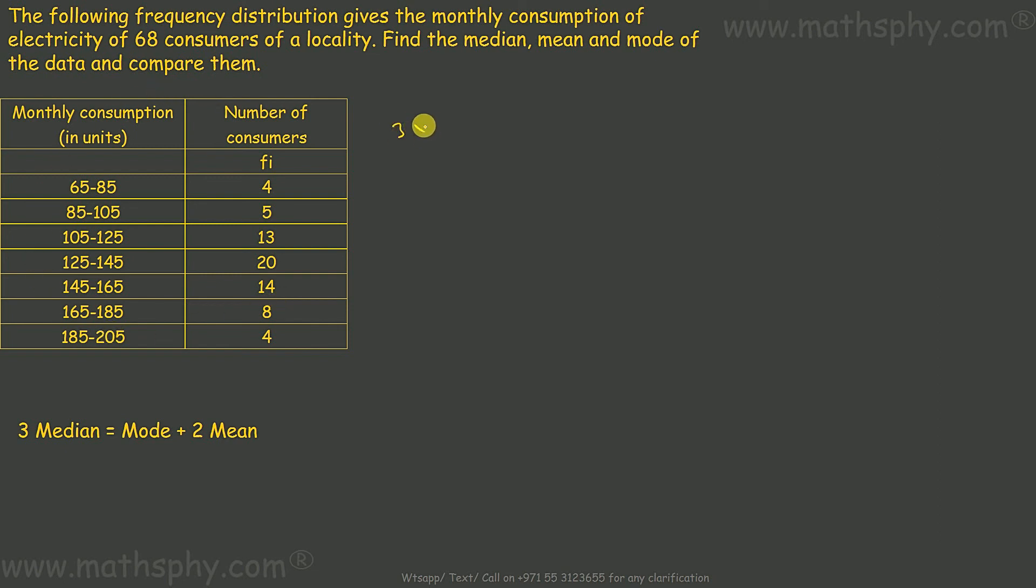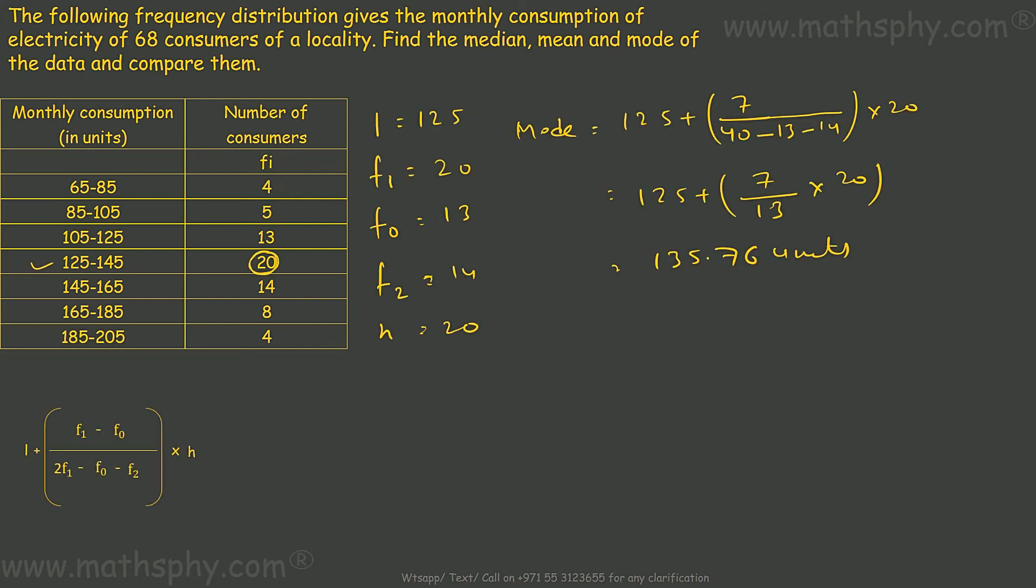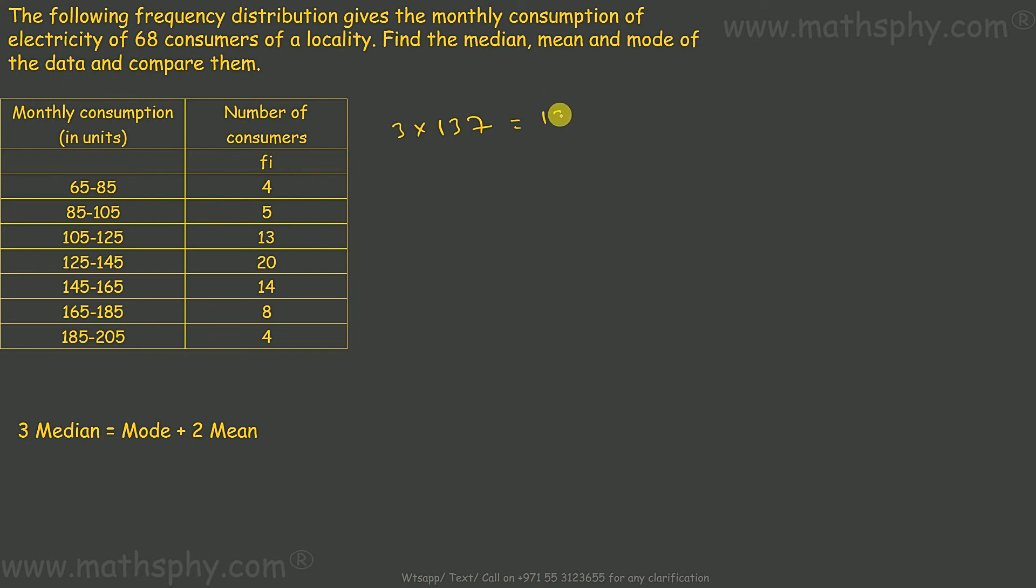3 times median, so 3 into 137 equals mode which was 135.76 plus 2 mean. This will be 411 minus 135.76 equals 2 mean. This comes to 275.24 over 2 equals mean.